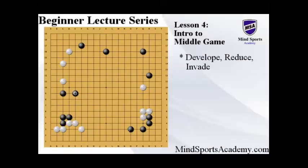To figure out which one we need to do, we need to ask ourselves: which area is the biggest territorial area? In this case, the top right and the top are Black's area, and it's the biggest territorial framework on the board. If it is ours, then we would simply develop it. For example, if it was Black's turn, Black would simply jump up and build this position up — make it bigger, make it larger, and make it more difficult for your opponent to deal with it.